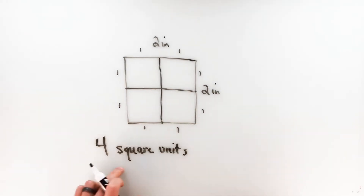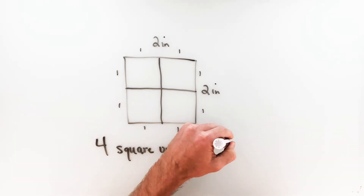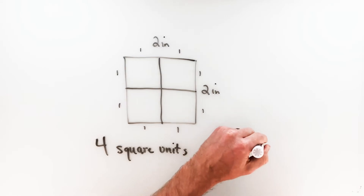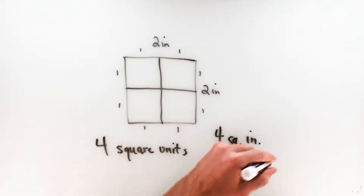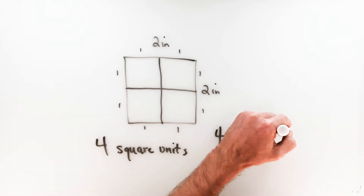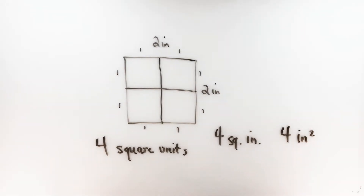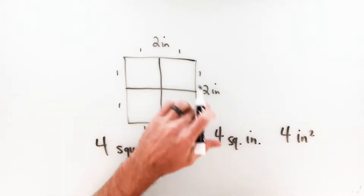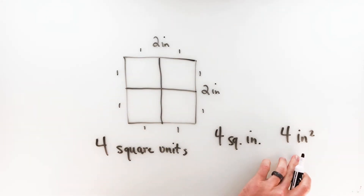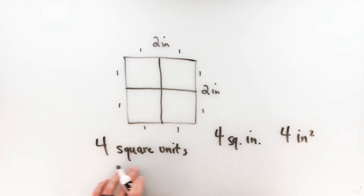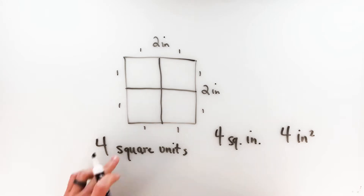So I know that the area of this two by two inch square is four square units. To write your label, you can write it as square units. In this case it's inches, so I can write it as four square inches. You might also see it written as four inches squared with a power of two. Any one of these is fine. Whatever your label happens to be — in this case inches — if it doesn't have a label you can just write units.